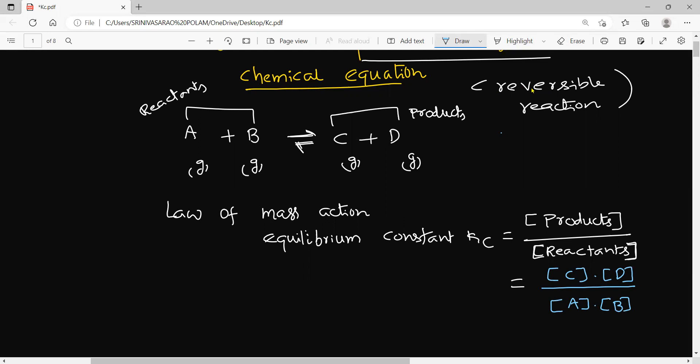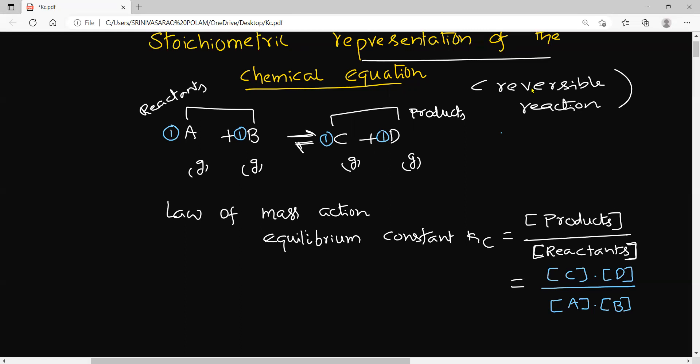Suppose if you have a stoichiometric coefficient in this equation — you have stoichiometric coefficient 1, 1 only. Suppose if you have any stoichiometric coefficient, each stoichiometric coefficient can be written as the power of the concentration term. This is called the equilibrium constant expression with respect to molar concentration.